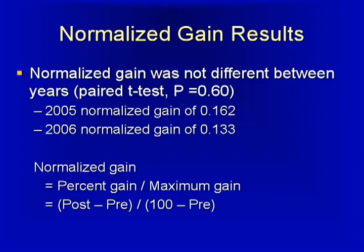I had normalized gains in both years of 0.16 and 0.13. These are not large normalized gains. We're looking at usually something above 0.2, 0.3 to be something where you've really done something important. And so now I go, oh, I stink.